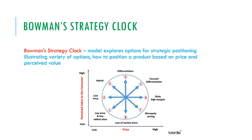Moving around the clock starting at position one: low price and low perceived value is low price and low added value. Medium perceived value with low price is just low price. High perceived value to the customer with a low price is hybrid — one of the best positions to have. Very high perceived value with a medium price is differentiation. High perceived value with a higher price is focused differentiation. Medium perceived value with a very high price is risky high margins. High price with low perceived value is monopoly pricing — there are no substitutes so consumers have to buy it regardless of perceived value. Medium price with low perceived value means loss of market share.